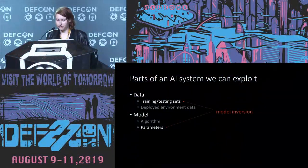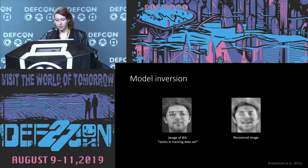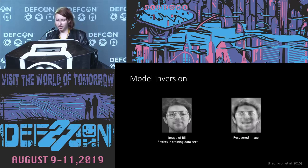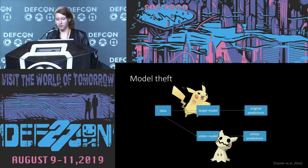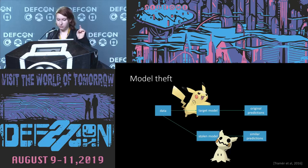We can also do a cool attack called model inversion, which is basically taking the model and shaking it creatively with some statistics, and then making the training data fall back out. So for example, we have a picture of a guy named Bill that exists in a training data set for a facial recognition system. It turns out you can recover a picture of Bill by essentially asking the model not who is in the picture, but to make it draw who it thinks Bill is — that's the inversion. We can also steal the parameters of a model through an attack called model theft, which usually involves a surrogate model trained on the same data as the target model. We take the output predictions from the target model and pair them with the original data set to make a new training data set, and when we train our stolen model it'll give us similar output predictions as the target. It's basically just stealing the model using their inputs and outputs.